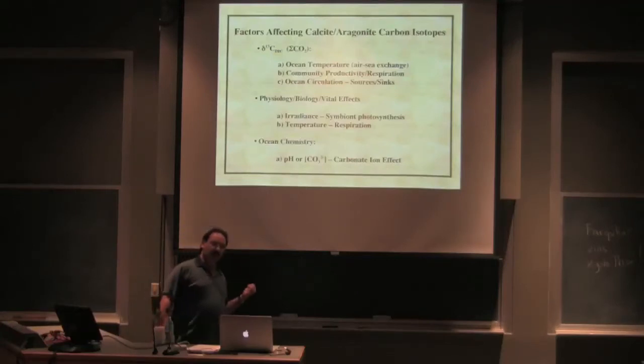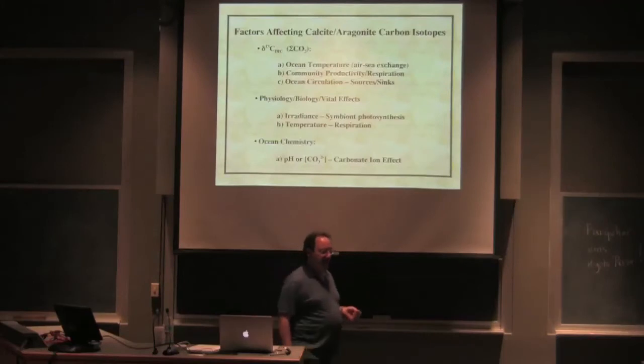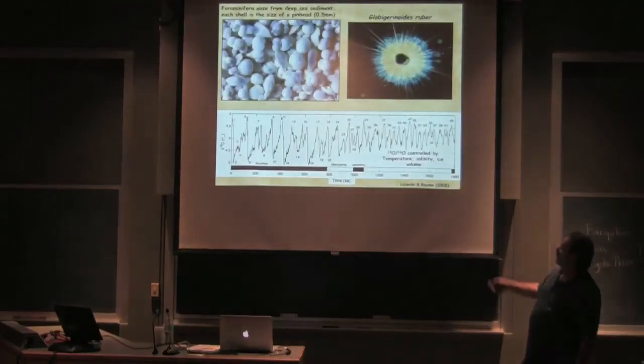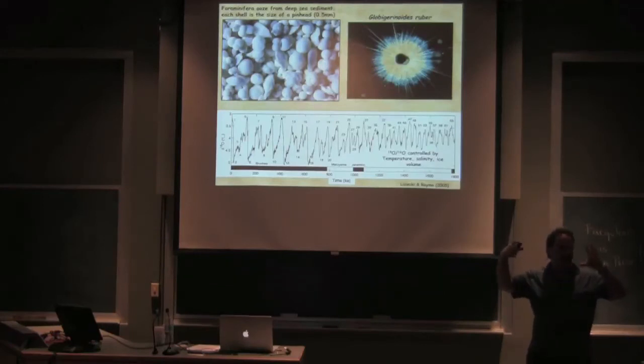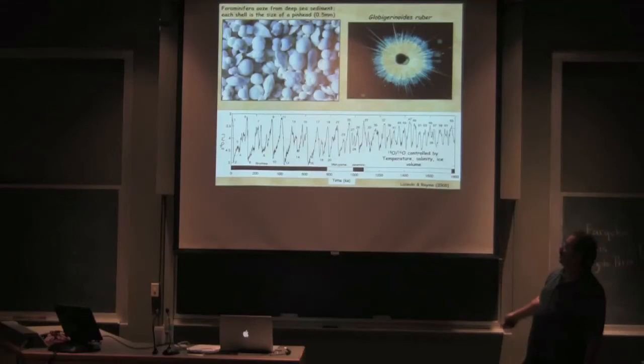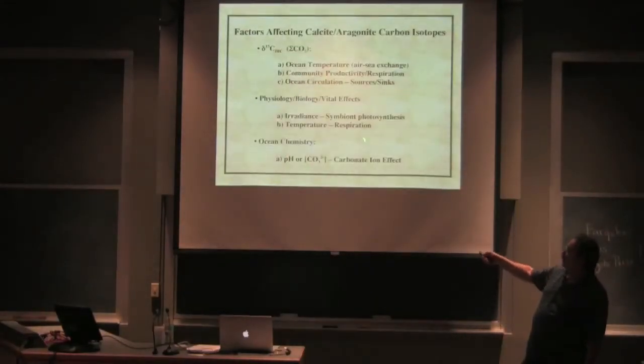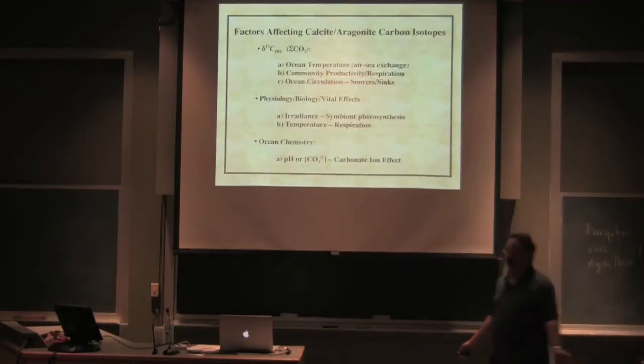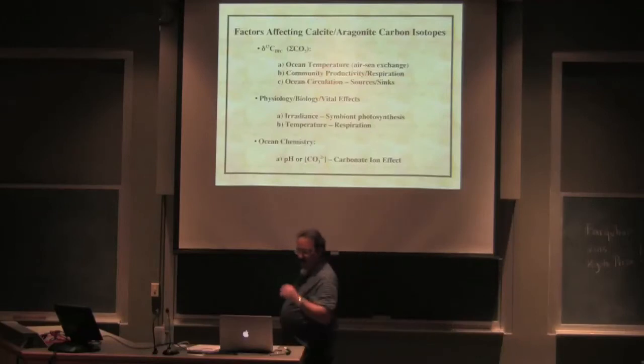For the organisms that I was working on, which were these planktonic foraminifera, it turns out that the two important components that affect everything with respect to carbon and oxygen is symbiont photosynthesis. I'm going to go back to all this golden stuff around there. Those are symbiotic dinoflagellates that are living on the spines surrounding this calcifying shell. So we're looking at light, how deep it is in the photic zone. It's going to affect photosynthetic rates, which can have an effect on the delta-C13 of the shell, and also temperature because that affects respiration and photosynthesis. And we'll come back to pH a little bit later as we discovered it.